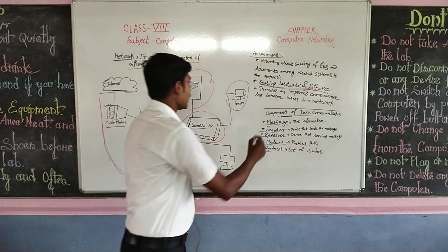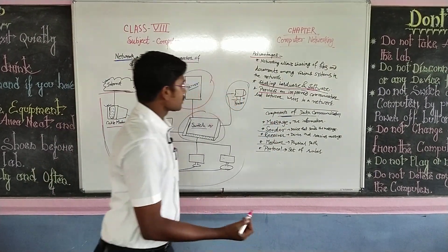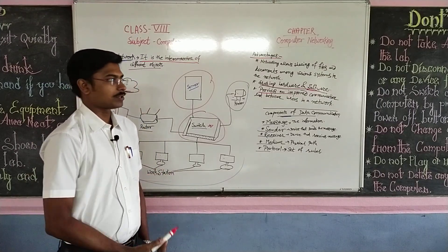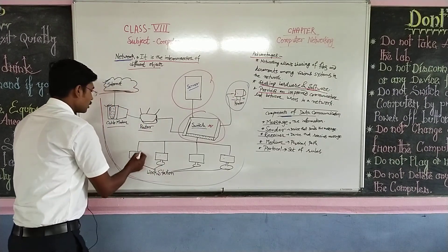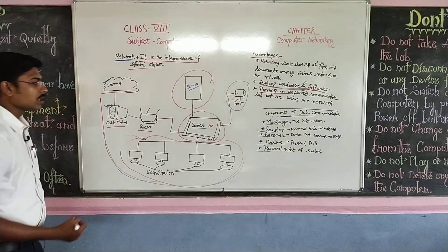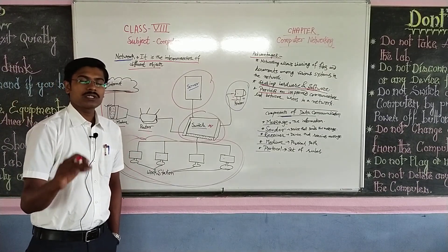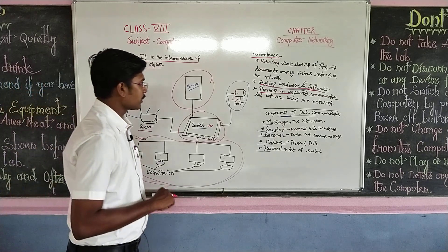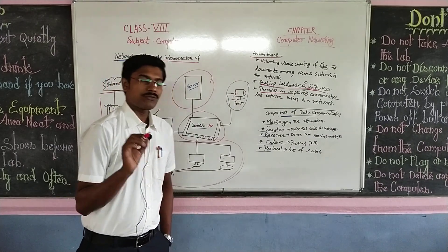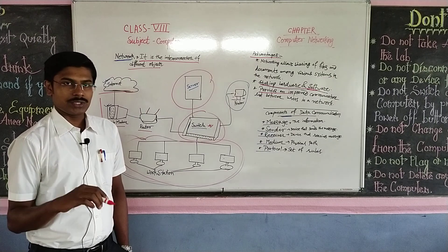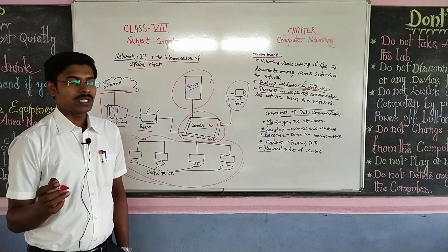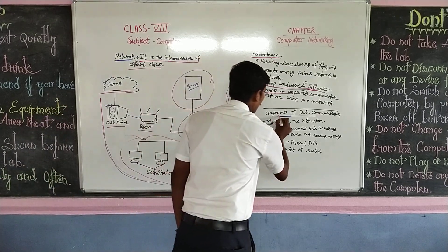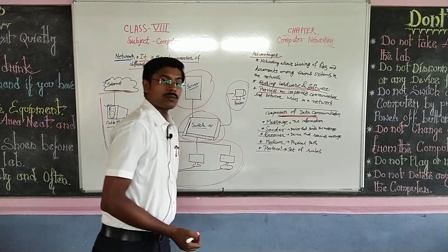The next advantage is that it provides an improved communication link between users in a network. When these four machines are connected to a network, it is possible to improve the communication link between those users. Now, when we share our file or data to another machine or workstation when they are connected in a network, what are the components needed for this data communication?